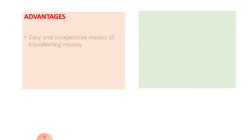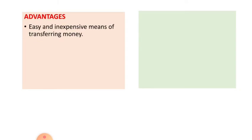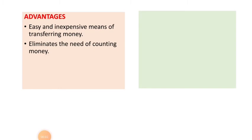Next we will do the advantages and disadvantages of payment by check. The check provides an easy and inexpensive means of transferring money. It may be drawn for any sum within the limit of the drawer's balance in the bank account. Payment by check eliminates the need for counting and checking the bank notes. A check drawn payable to an order must be endorsed, and if it is crossed must be paid into the bank account.